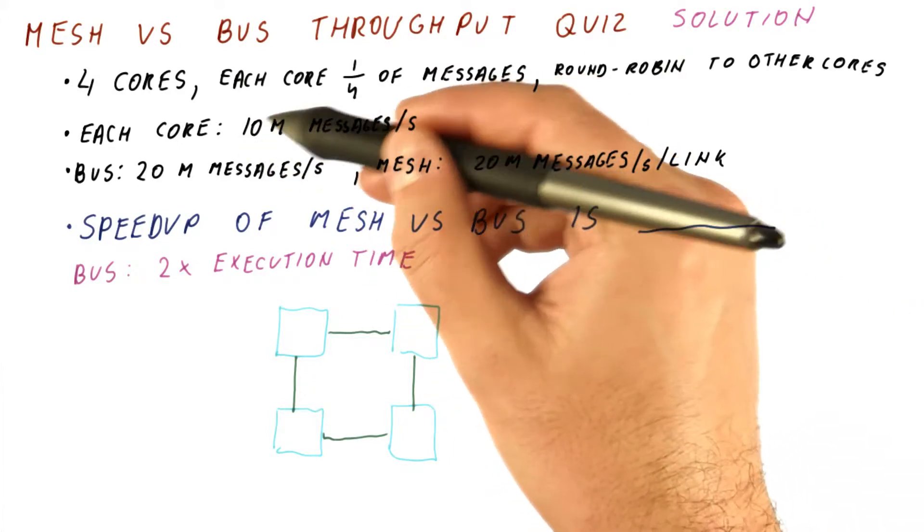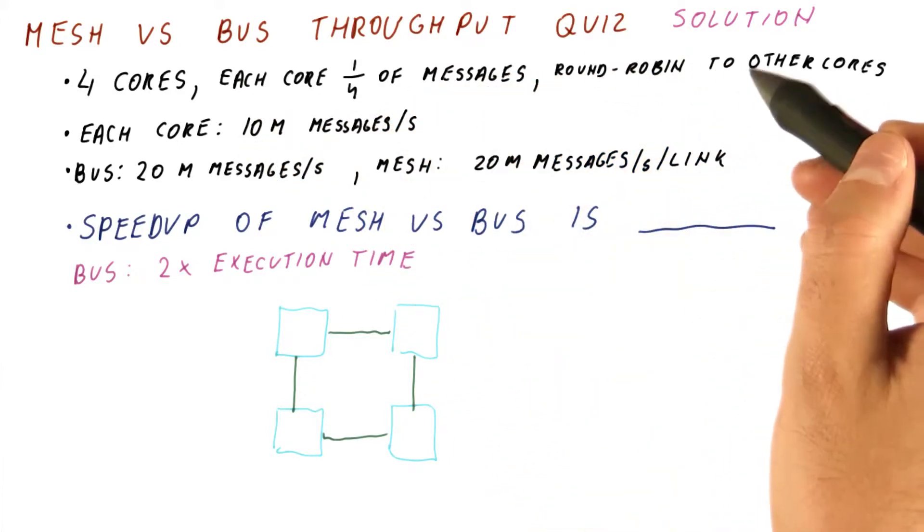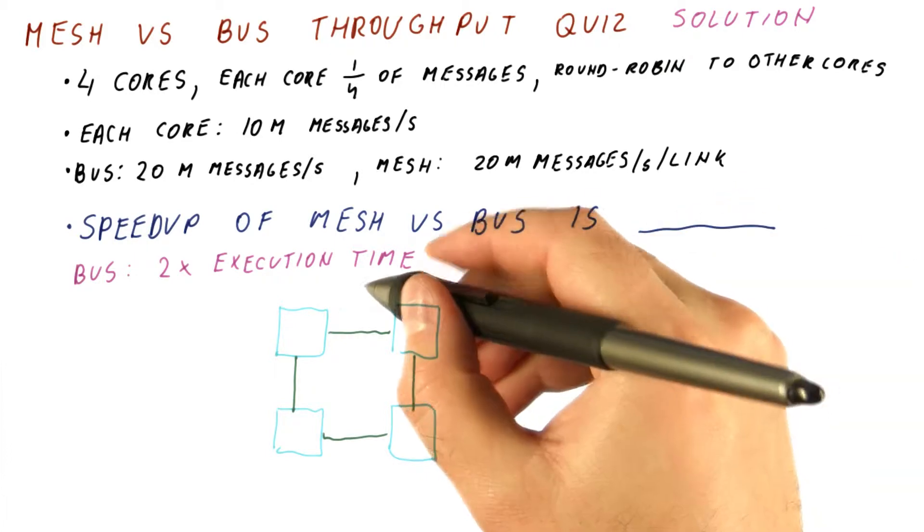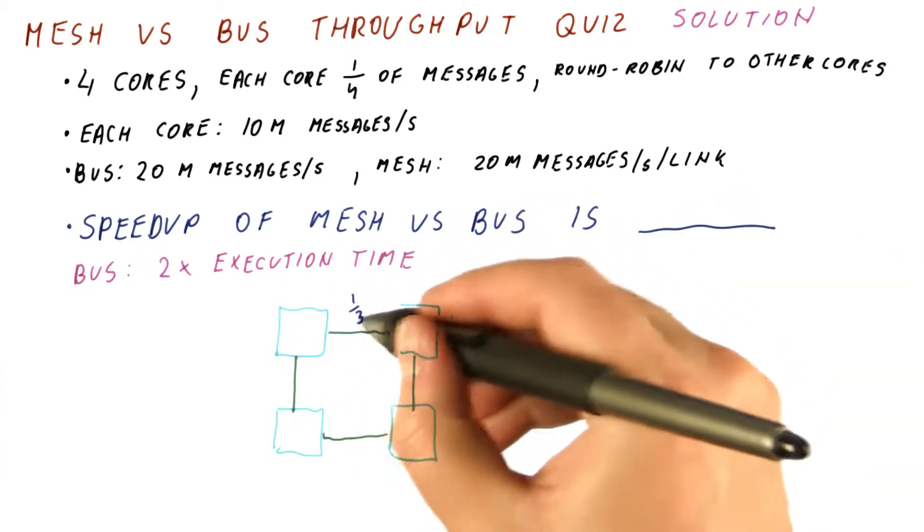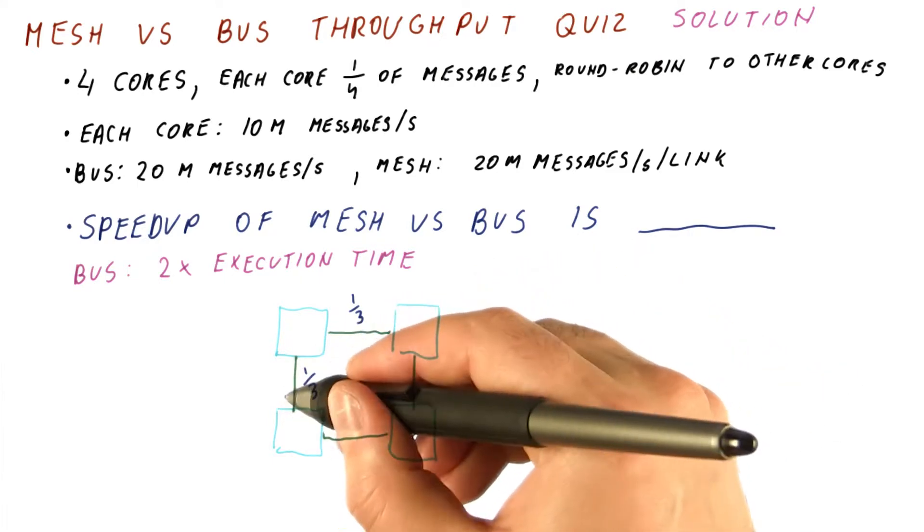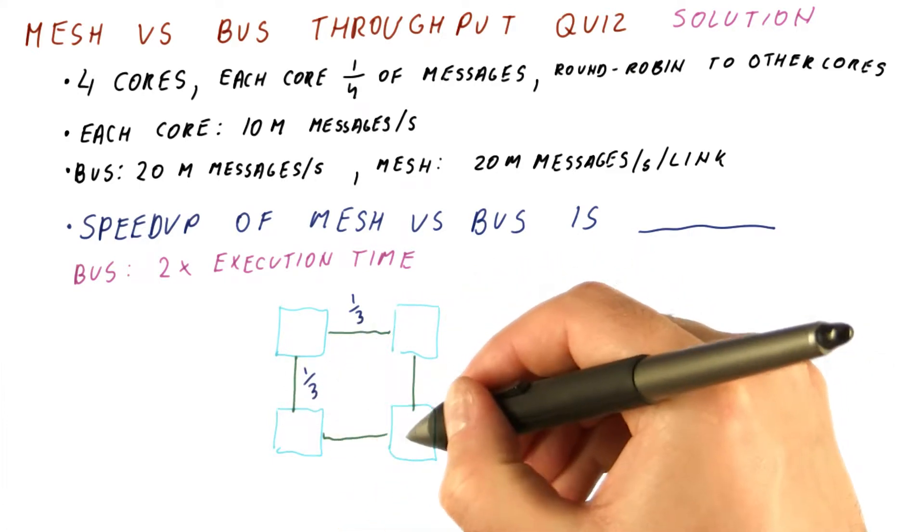Each core is generating 10 million messages. 3.3 million are going to each other core. So all of the 10 million messages sent here, one third are going to this core. One third are going through this link, and then one third are going here.